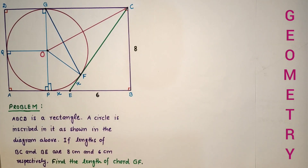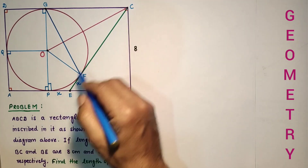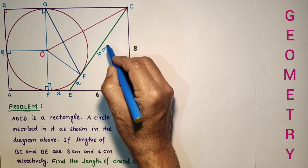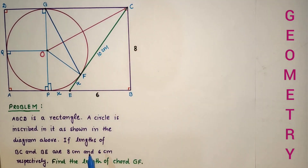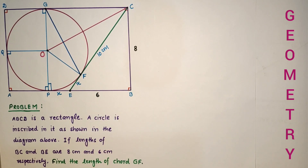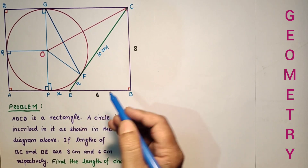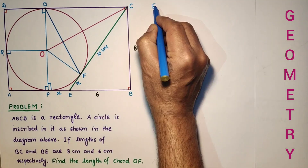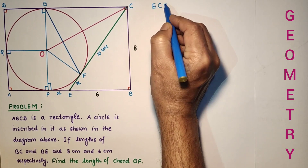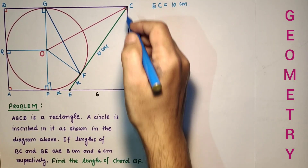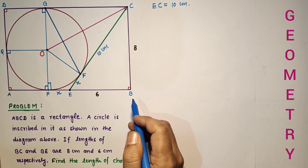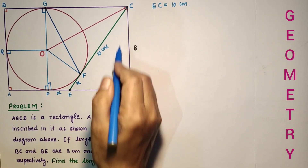Using the Pythagorean triplet 6, 8, and 10 as the sides of the right angle triangle, CE will be 10. Since 3-4-5 is a Pythagorean triplet, double of that gives 6, 8, and 10 cm. So EC is equal to 10 cm.